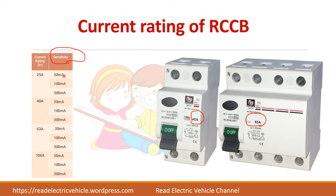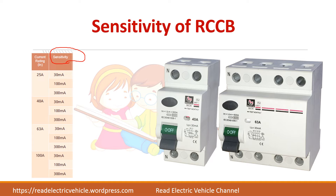For example, for a 40 amp current carrying capacity, the sensitivity is given as 30 milliamps. Sensitivity can be 30 milliamps, 100 milliamps, or 300 milliamps. The 30 milliamps refers to the sensitivity of the RCCB — it indicates the residual current level at which the breaker will trip.